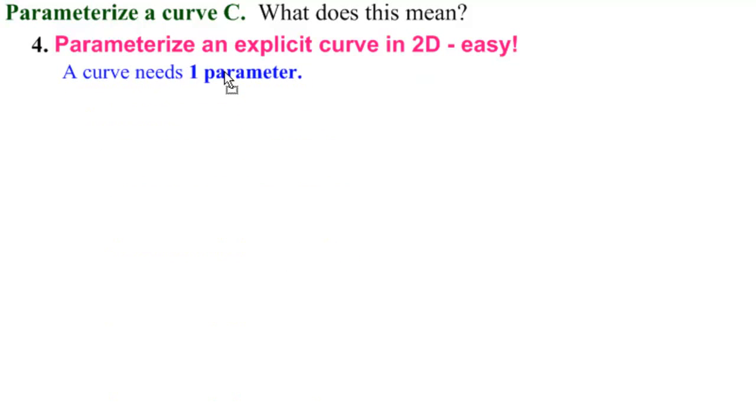Remember, a curve needs one parameter. And let's see, what is an explicit curve in 2D? It's just a real valued function of one variable and an interval. So this is an explicit curve in 2D.